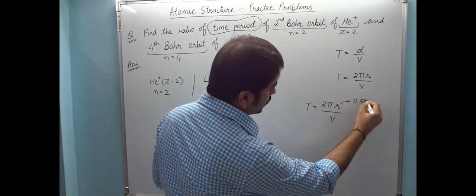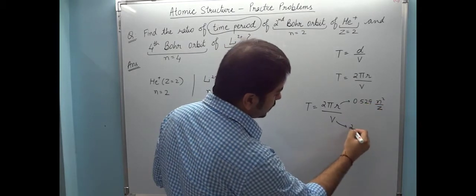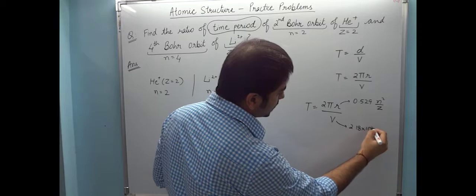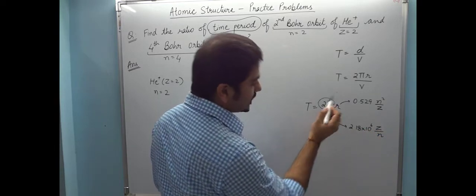Radius formula is 0.529 × n²/Z. Velocity formula is 2.18 × 10⁶ × Z/n. Now this 2π is constant.